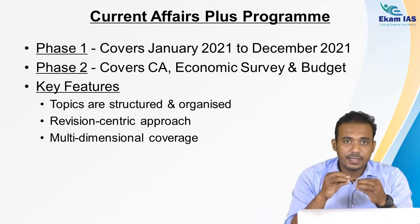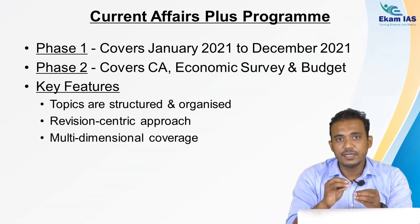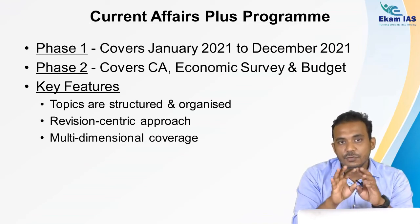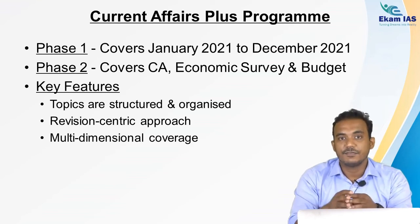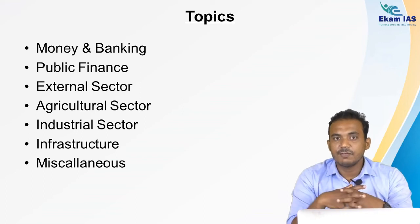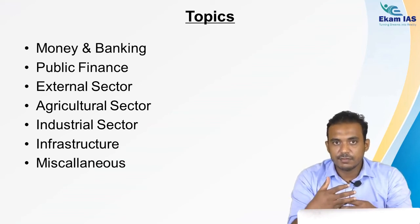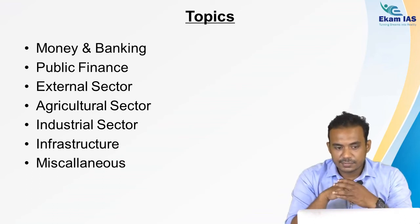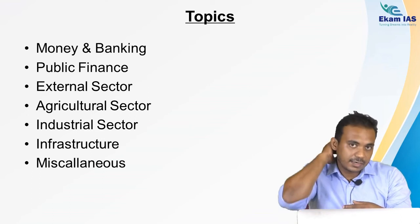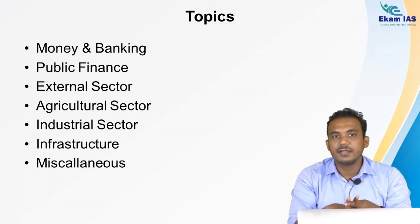Analyzing UPSC patterns, there are at least 15 to 20 questions in every prelims examination from economic development topics, and of those, at least 13 to 17 are from current affairs. UPSC chooses a particular topic to frame a question if it has specific relevance to current affairs. The key topics identified for economic development preparation include money and banking, public finance, external sector, agricultural sector, industrial sector, infrastructure, and miscellaneous topics — as UPSC has widened its scope while framing preliminary questions.